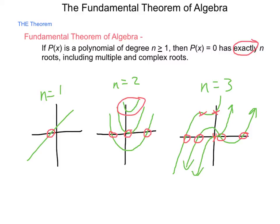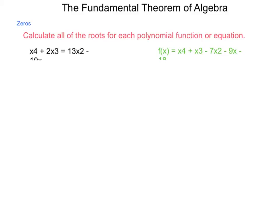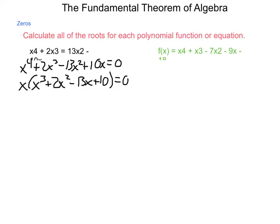Let's take a look at how we can use this to help us narrow down some of our work. Let's calculate all the roots for each polynomial function or equation. Well, our first one, we need to put in the standard form to make it even valid for the fundamental theorem of algebra. So, moving everything to the left, we end up with x^4 + 2x^3 - 13x^2 - 10x = 0. Because this is a fourth degree polynomial, I must have four roots of some sort. So, the first thing I want to try and do is factor this. I can pull an x out of everything, leaving me with x^3 + 2x^2 - 13x + 10 = 0. Now, I know that one of my roots is going to be x = 0, because that is what makes this first term zero.